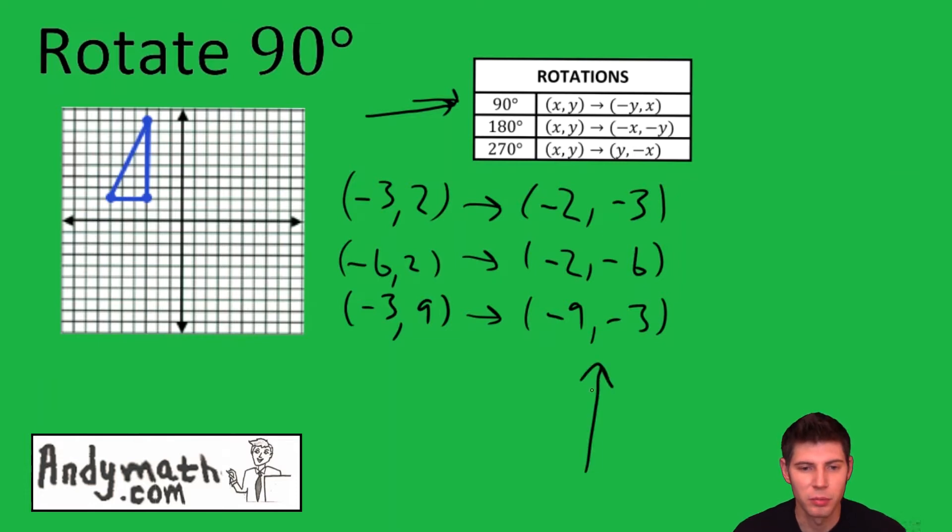Now if I plot this set of points here, that is going to be my rotation by 90 degrees: (-2, -3), (-2, -6), (-9, -3). And I'll connect the dots, and that's it. That's the figure rotated 90 degrees.